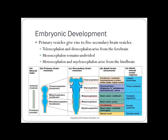The diencephalon is going to be your thalamus, hypothalamus, epithalamus, and vision — so emotions and regulation. The mesencephalon becomes your midbrain. The metencephalon becomes your pons and cerebellum. The myelencephalon becomes your medulla. The mesencephalon, metencephalon, and myelencephalon form your brainstem. Your prosencephalon forms the higher brain.